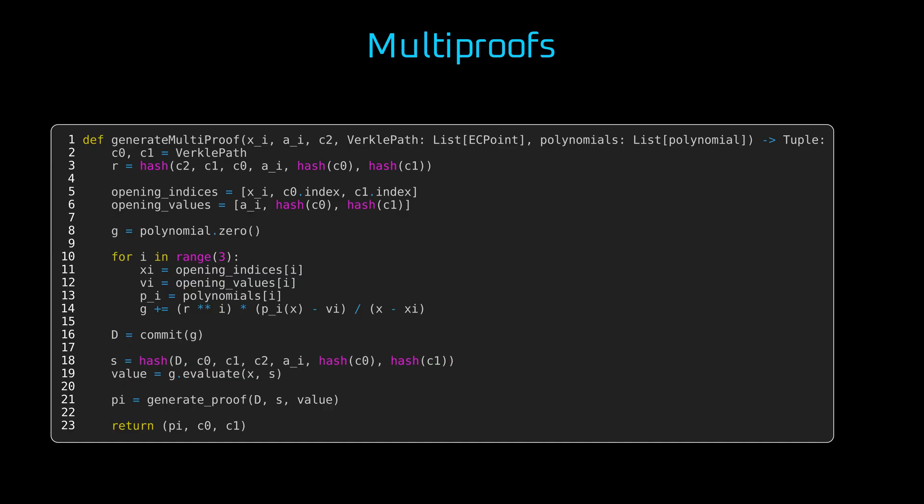We now choose a new random coordinate S, again using a hash of all previous inputs and evaluate G of S. Finally, we generate the opening proof pi for this evaluation using our commitment D. And that's it. This single proof pi now serves as a multi-proof for the values AI, hash of C0, and hash of C1.